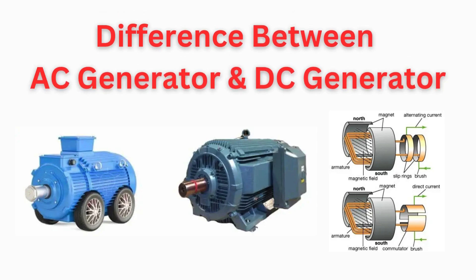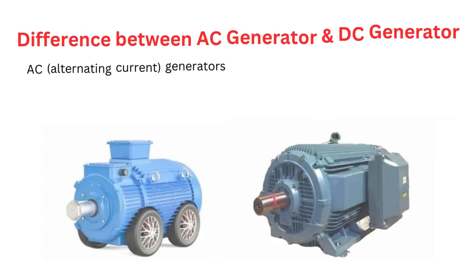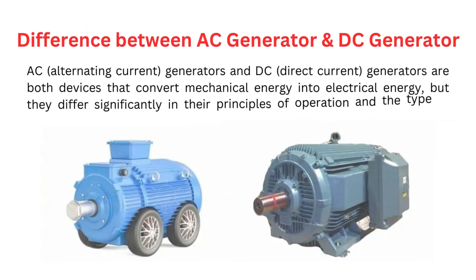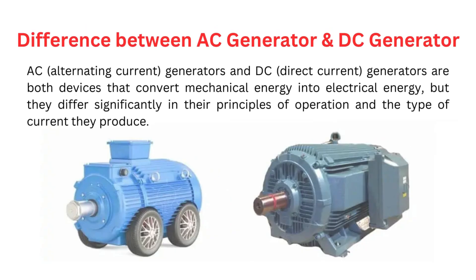In this video, we learn about the difference between AC generator and DC generator. AC, alternating current generators, and DC, direct current generators, are both devices that convert mechanical energy into electrical energy, but they differ significantly in their principles of operation and the type of current they produce.